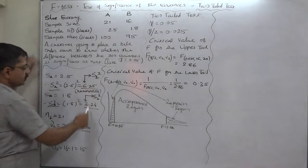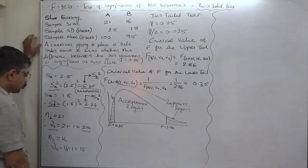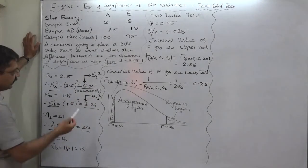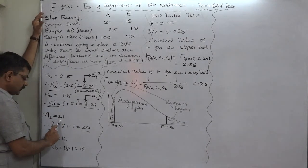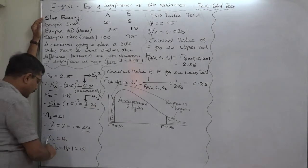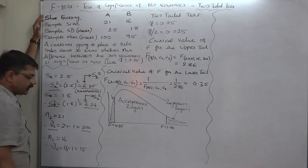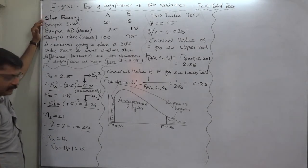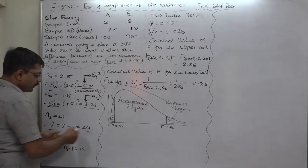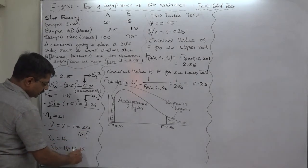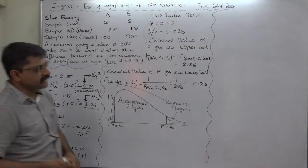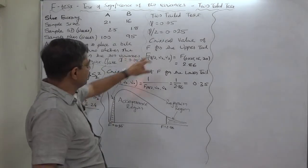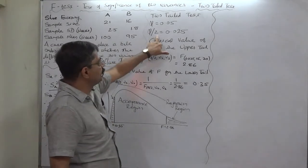So this is S1-squared and the other is S2-squared. On that basis, n1 is 21, so the degree of freedom is 20, and n2 is 16, so the degree of freedom is 15. These are the degrees of freedom of the numerator as well as the denominator. Since this is a two-tail test, we go for alpha by 2, that is 0.025.